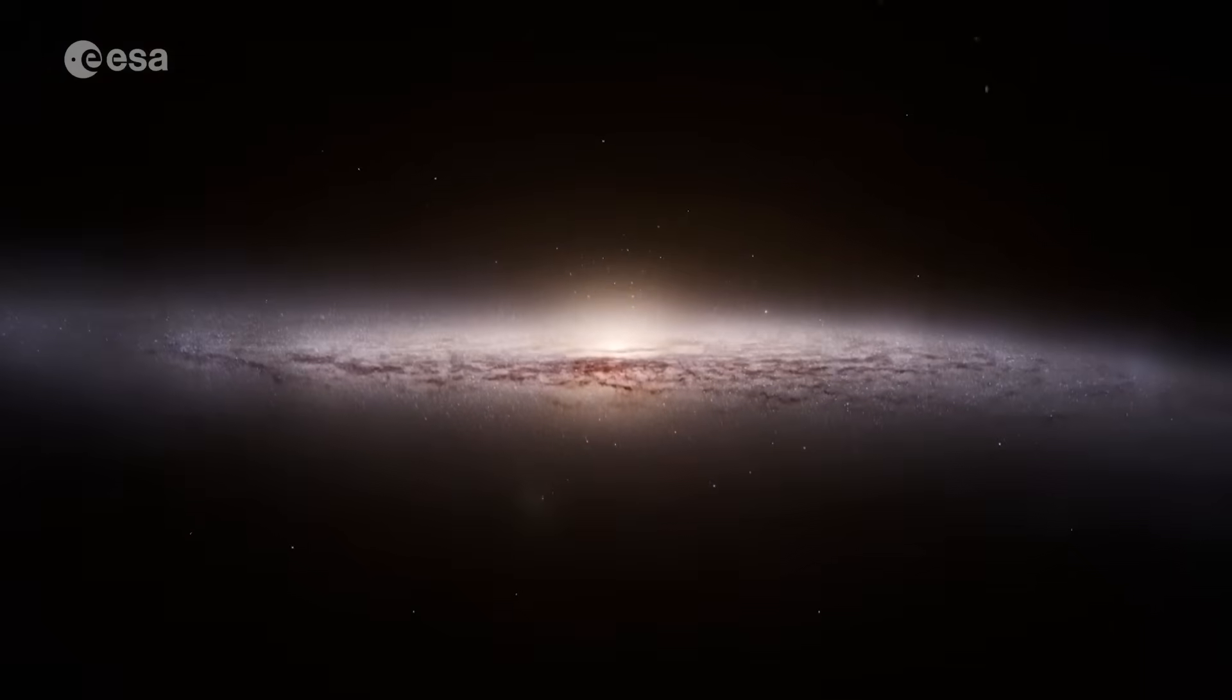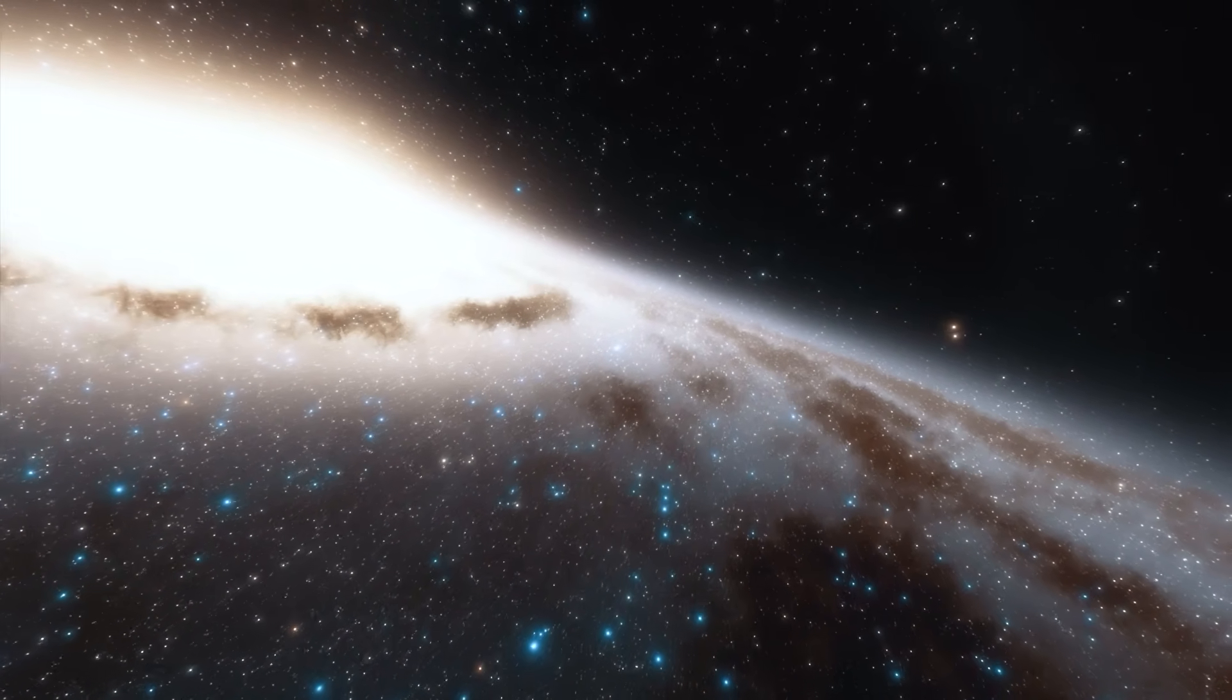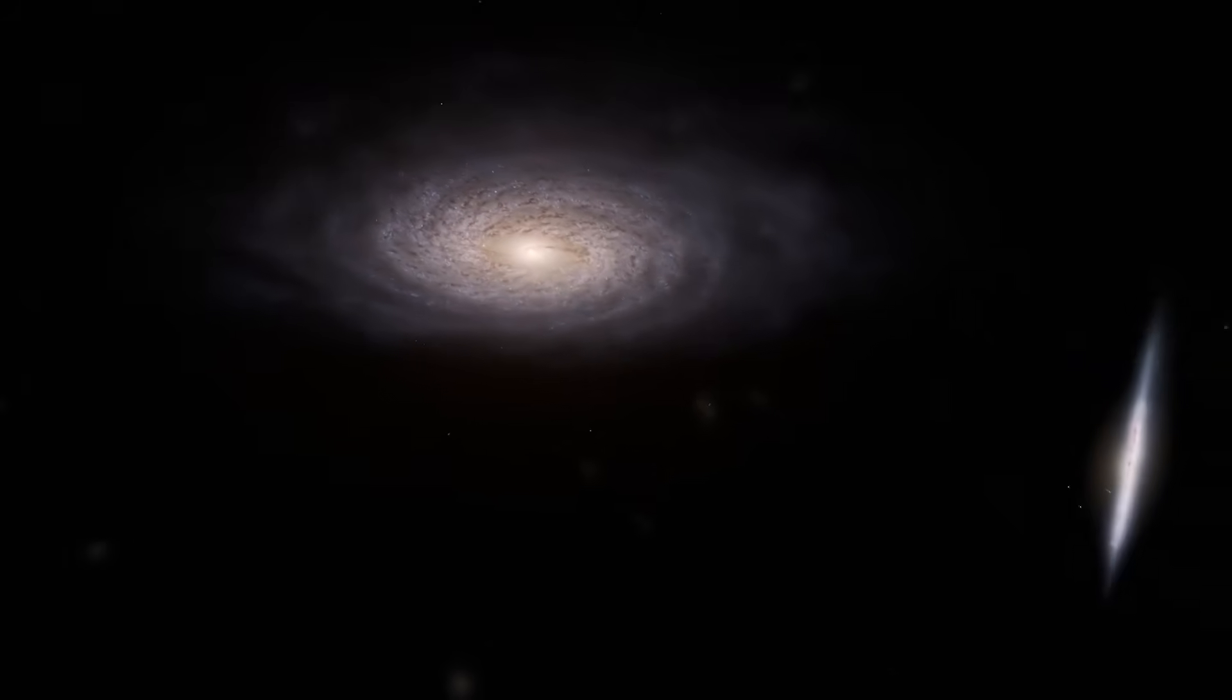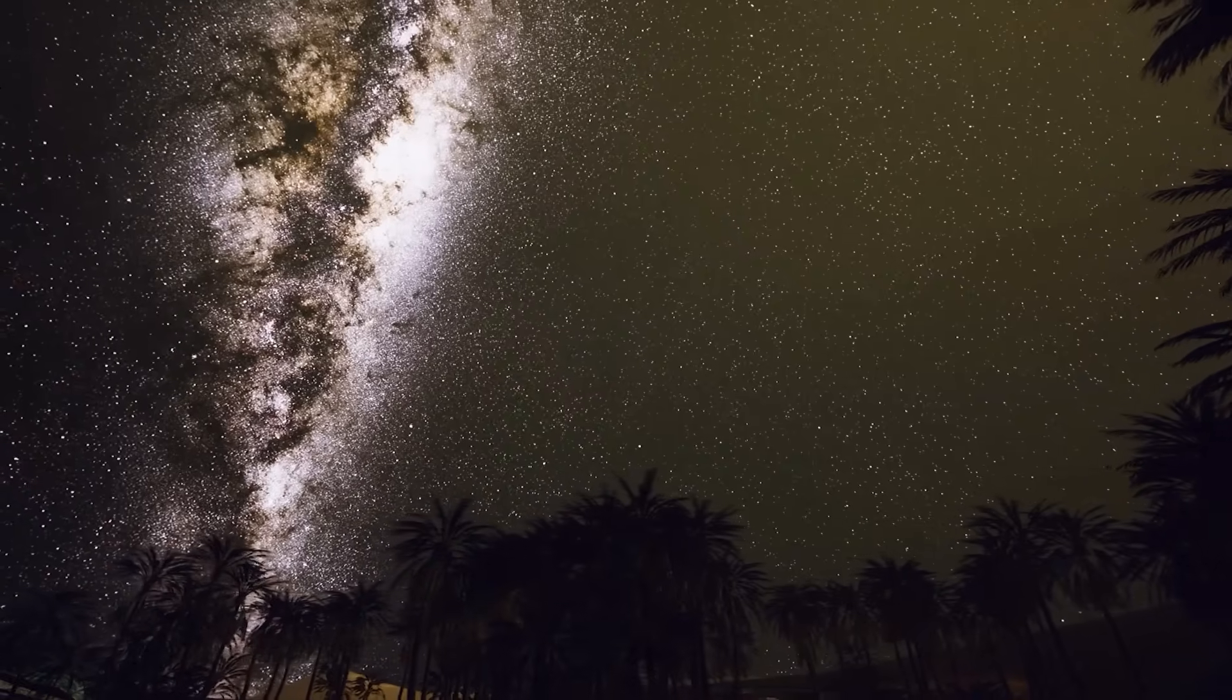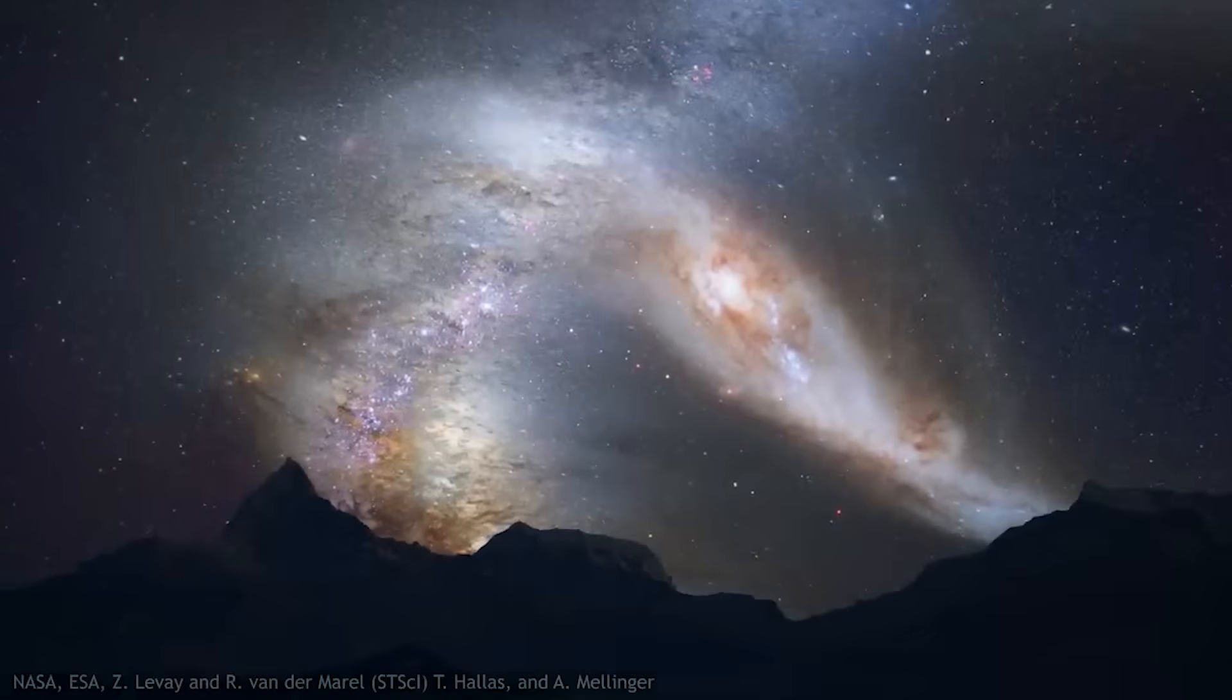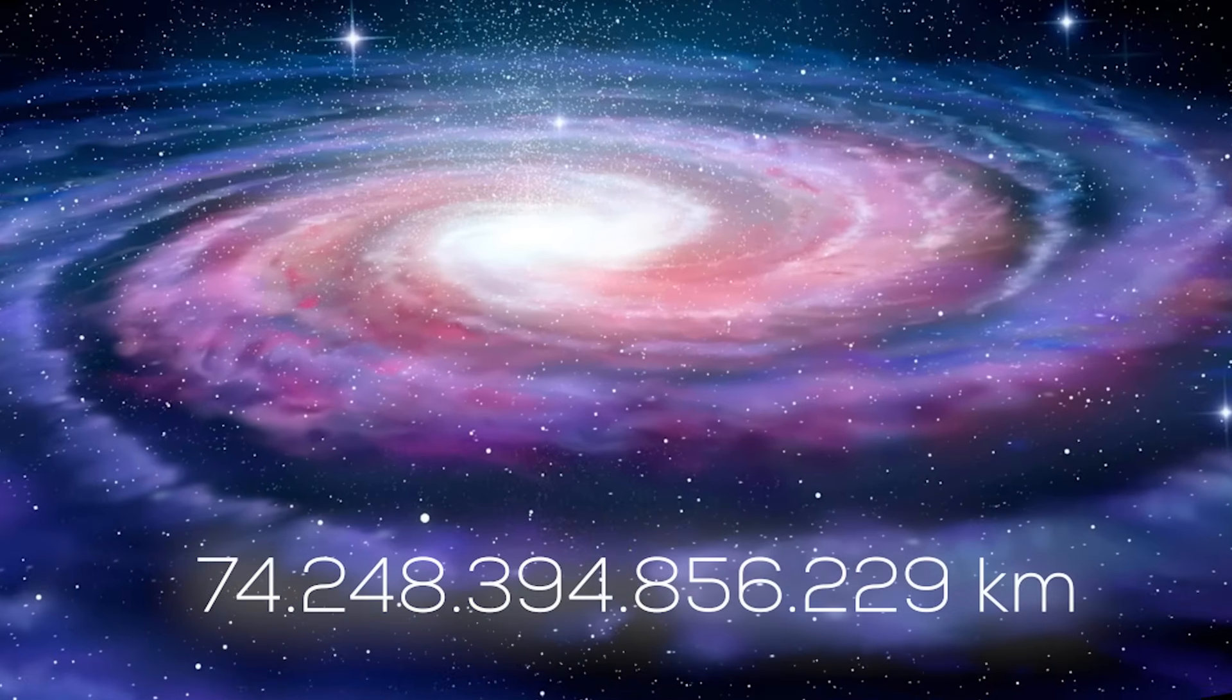The Milky Way, our home, measures about 100,000 light years across. Saying the number is simple. Grasping what it means is not. The mind tries to hold the scale and it slips away. How do we make it tangible? One strategy is to shrink the galaxy down to a reference we know well: Earth's size. If we compress the Milky Way, which spans approximately 100,000 light years, down to the diameter of our planet, about 12,742 kilometers, we're reducing the galaxy by a factor of roughly 74 trillion.